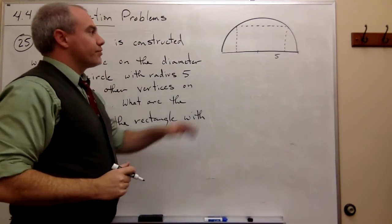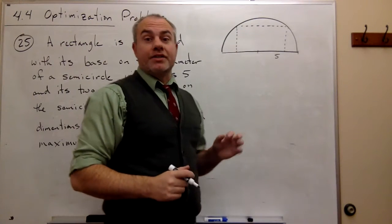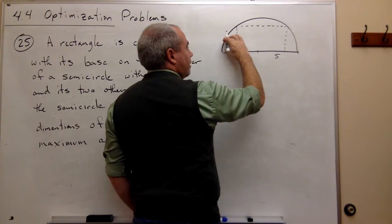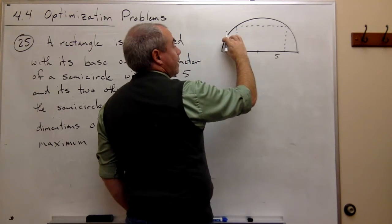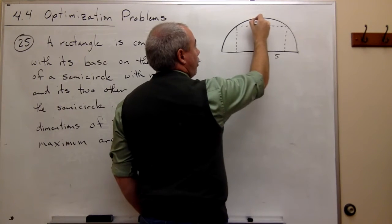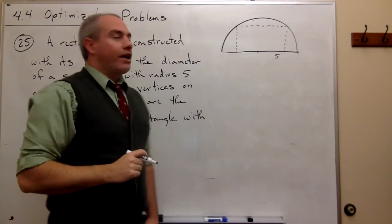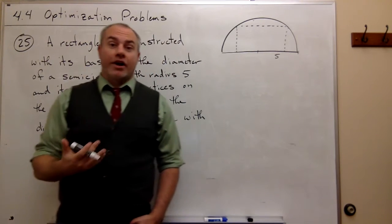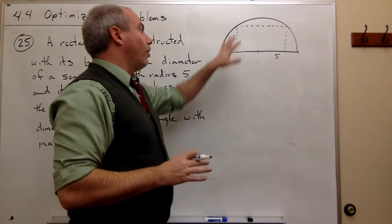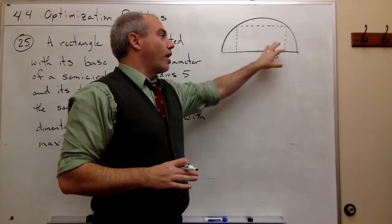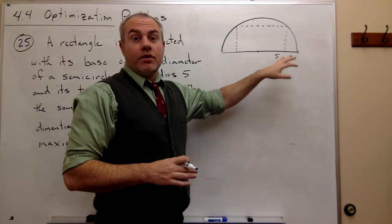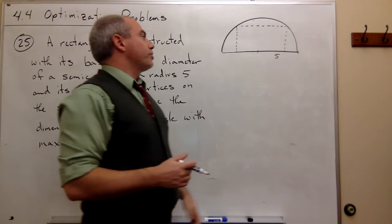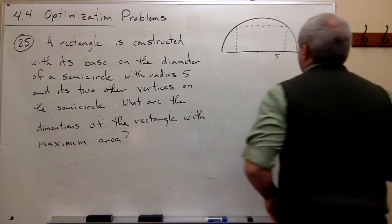Notice that this rectangle is not the only rectangle that I could inscribe in this thing. I could inscribe a short rectangle that's long, or I could have a tall rectangle that's thin. All of those rectangles that I could inscribe in that semicircle have a different area. What I'm asking is, of all the rectangles I could inscribe inside this semicircle, which one has the maximal area? So I'm trying to optimize the area of that rectangle.